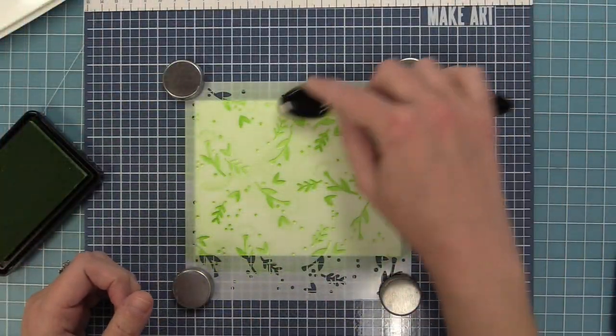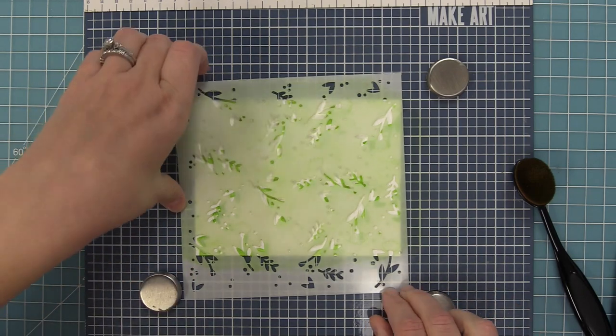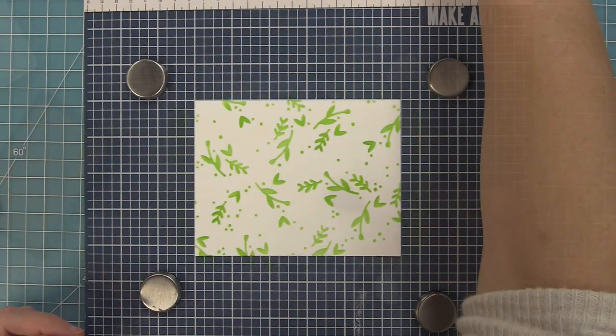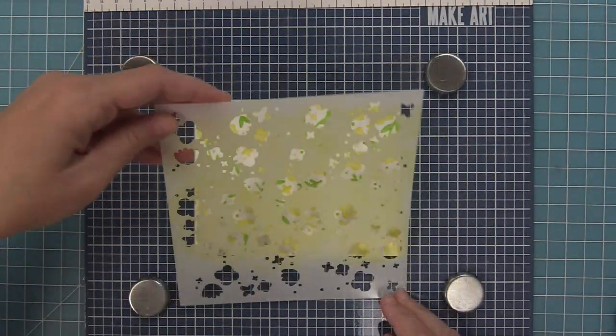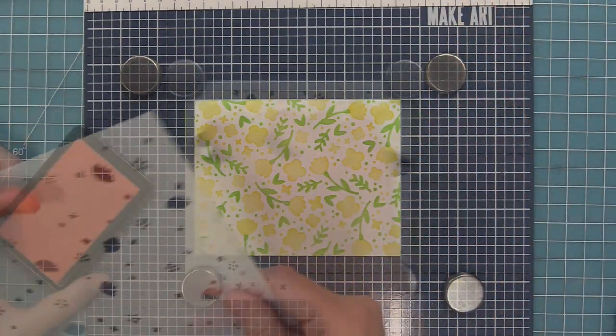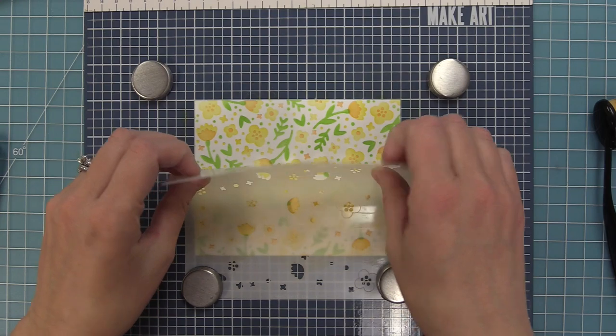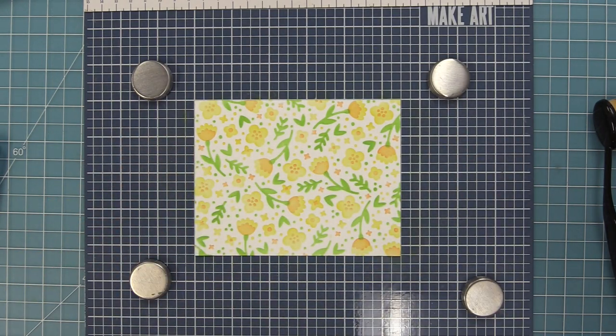Another way that I like to use the clear stencil paste is to use it to highlight little parts of an image when you're using layered stencils. So here we're using the Spring Blossoms background stencils and it's a three-part layer. So we're going to do our green leaves and then our yellow flowers and then the last stencil adds little details to the flowers and to the background. So we're going to do that in a light orange color, ink up the whole thing and then you'll see here how pretty that is.